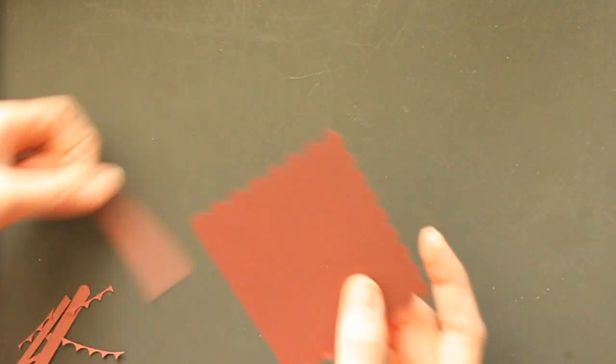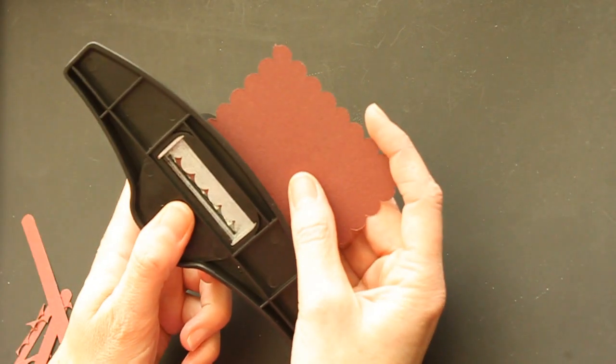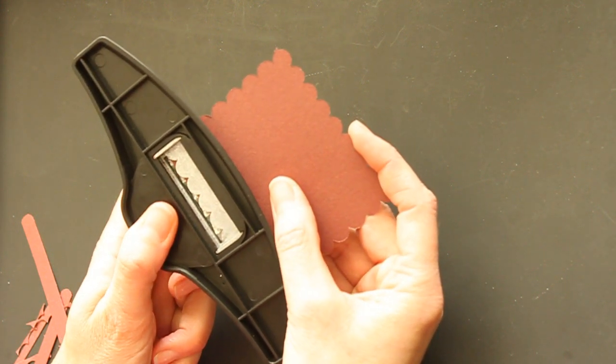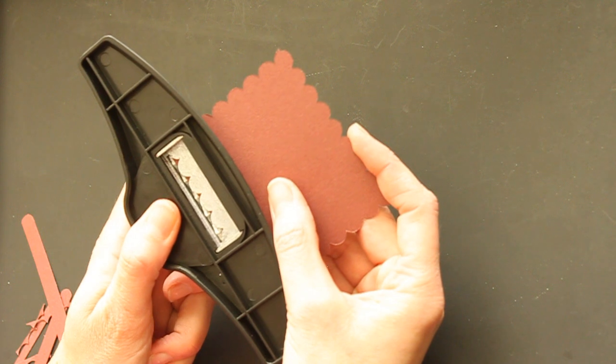And there you have a popsicle stick. And punch that edge as well. And then your scallop edge, your scallop rectangle is done.